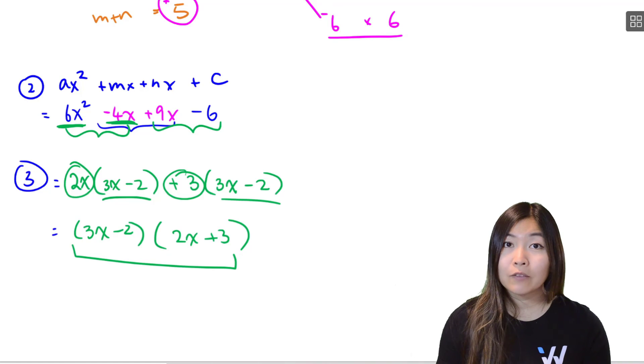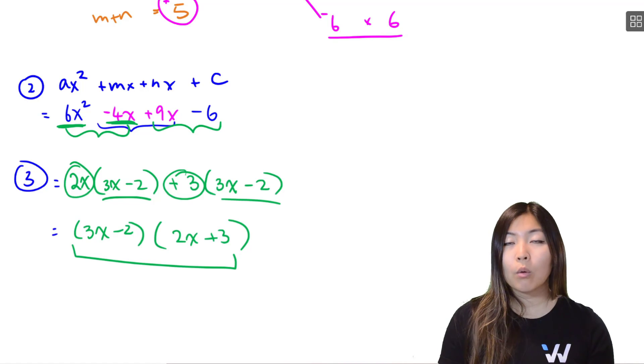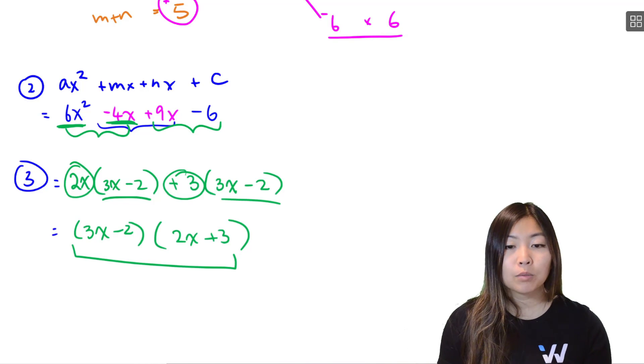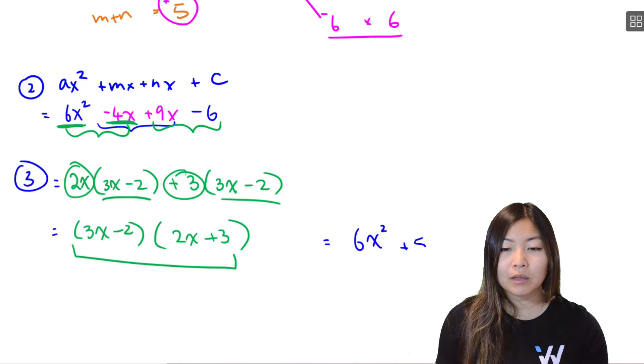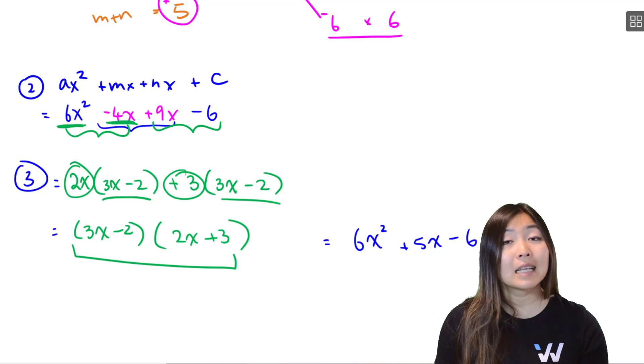And as an exercise, I'm going to have you do a quick check. Foil or use the distributive method, multiply this out, and you should end up back at 6x squared plus 5x minus 6. And that's how you know that you did this question correctly.